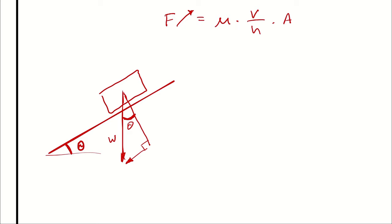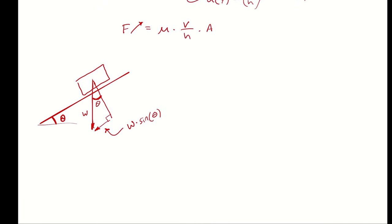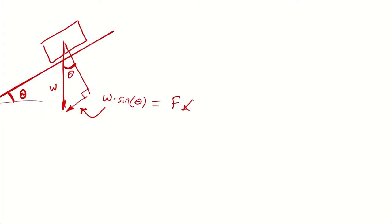Anyway, then this x-component leg of the weight force is going to be W times sine of theta. And that is going to be the force in the down and to the left direction. So since the force down and to the left is going to equal the force up and to the right, I can write these as being equal to one another.